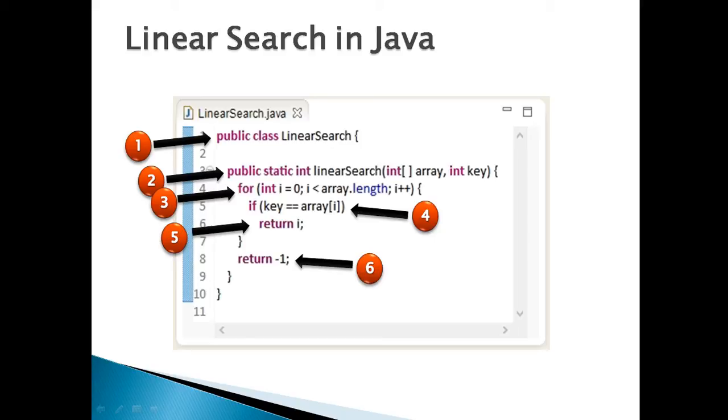Step 6: If no match is found then return integer value as minus 1, signifying that key is not found in array. Moving ahead.